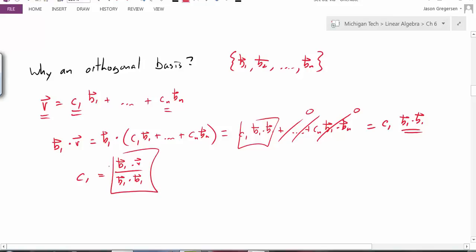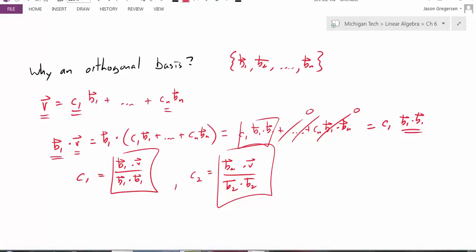So this would represent an expression for that first constant. And I could do that same process to find c2. Except instead of taking B1 dotted with V, I would take B2 dotted with V. And the result would be B2 dot V, B2 dot B2. And so I could generate a formula like this for each one of my coefficients. So we can see here that the value of the orthogonal basis is it gives me a systematic way to calculate the coefficients, the weightings of the basis vectors for any vector in my vector space.